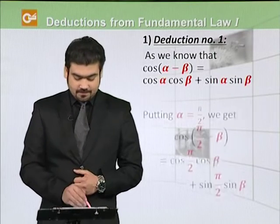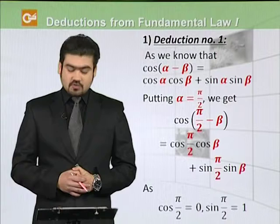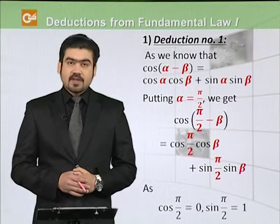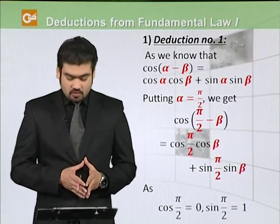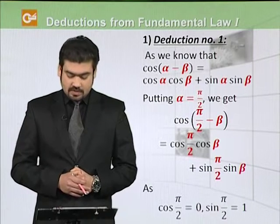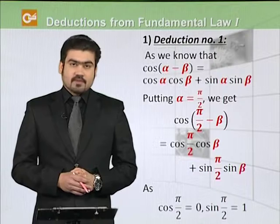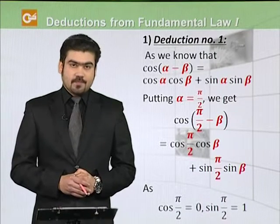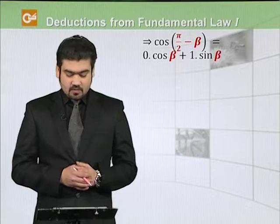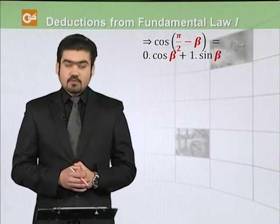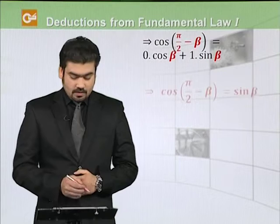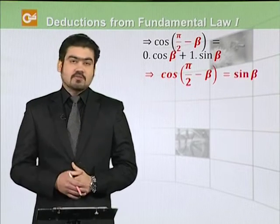First deduction: putting α = π/2. So cos(π/2 - β) = cos(π/2)·cos β + sin(π/2)·sin β. cos(π/2) = 0 and sin(π/2) = 1, so replacing these values: cos(π/2 - β) = 0·cos β + 1·sin β. Therefore, cos(π/2 - β) = sin β.